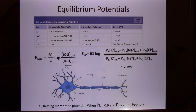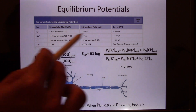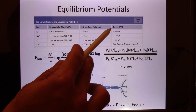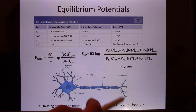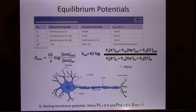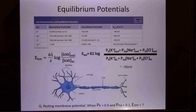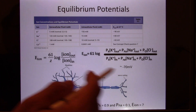If you suddenly make the cell membrane very permeable to sodium — say the ratio becomes 0.3 potassium and 0.7 sodium — then 0.3 multiplied by minus 90 plus 0.7 multiplied by plus 60 gives a very positive number. This is exactly what happens when a neuron generates an action potential: it suddenly increases permeability to sodium through the voltage-gated sodium channel, making the inside very positive.